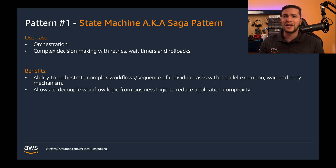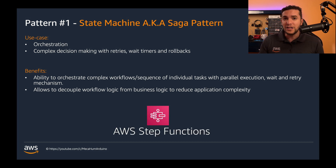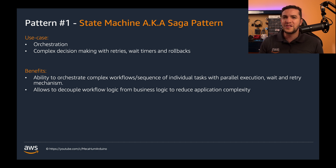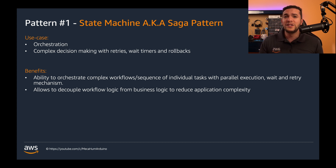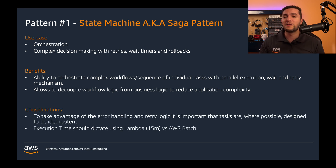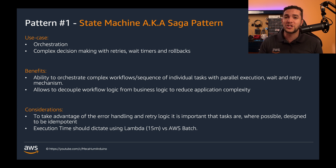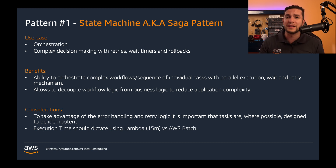The main benefit state machines provide is the ability to orchestrate a complex workflow of individual tasks. Building state machines with AWS Step Functions gives you native integration with various cloud services, allowing you to continue decoupling your logic into chunks and reuse existing Lambda work. The key consideration is that to take advantage of error handling and retry logic, your functions must be designed to be idempotent — meaning you can run them multiple times without changing the state of the system.